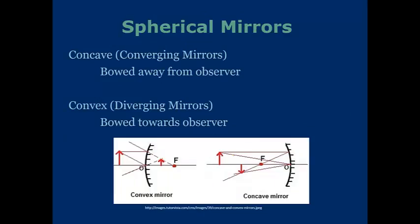The mirrors that are likely going to be tested on the MCAT are going to be spherical mirrors, and there are two kinds. Concave mirrors, or converging mirrors, are bowed away from the observer, whereas convex mirrors are bowed towards the observer. Examples of these two are listed below. Take note that there are ray diagrams for both of these. You're going to need to know how to draw these, and how to interpret these, if you are going to be successful come test day.